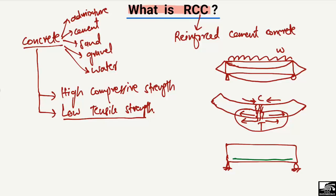Now when the uniformly distributed load acts on this reinforced beam, the steel bar will take the tension and the top will take compression. The compression will be taken by the concrete, which has high compressive strength. So now, when we consider how this beam deflects upon loading, it deflects like this.